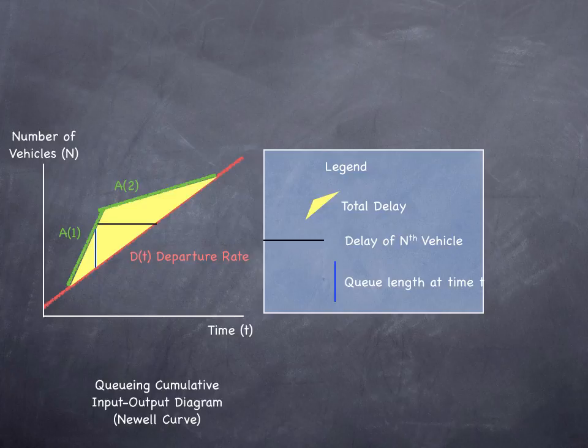What happens is that at some point, the number of vehicles arriving is less than the service rate, and the queue begins to get shorter and shorter. We have a rate of arrivals that's lower than the rate of departures, but we already have a standing queue.